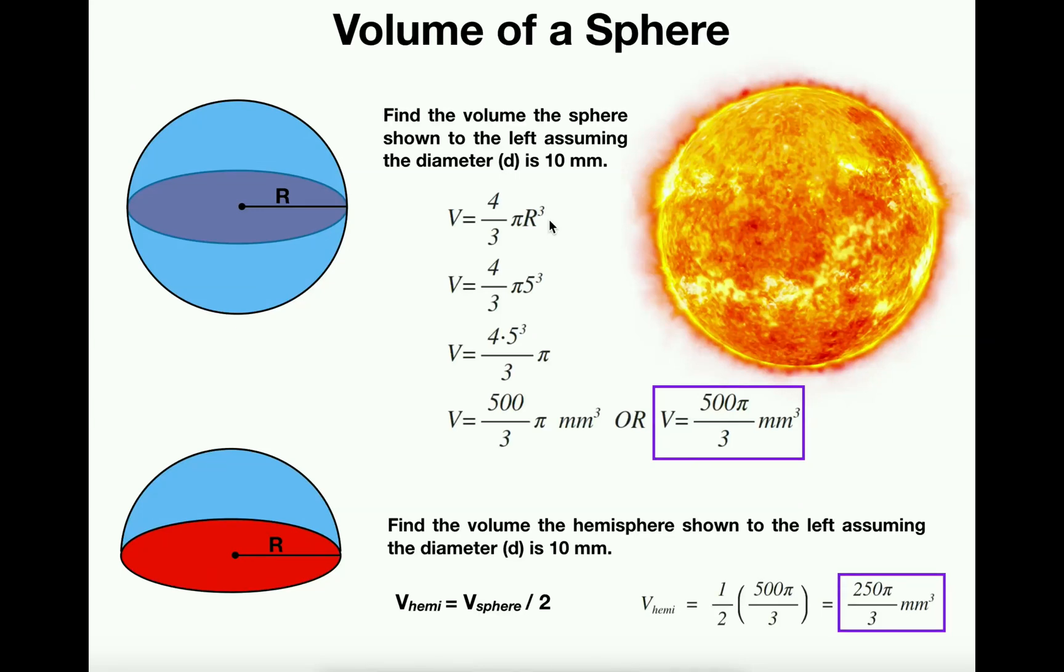But all we're going to do is plug in r equals 5. So the volume would be four-thirds times pi times the radius cubed, and the radius is 5, so this is 5 cubed.